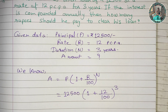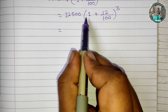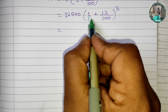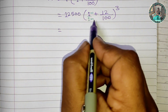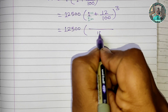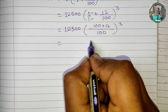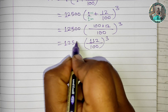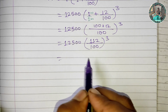Now we solve the bracket. We add 1 and 12/100 by finding a common denominator of 100. So 1 becomes 100/100, and adding 12 gives us 112/100. This is raised to the power 3, meaning we do 3 times multiplication: 12,500 × (112/100) × (112/100) × (112/100).